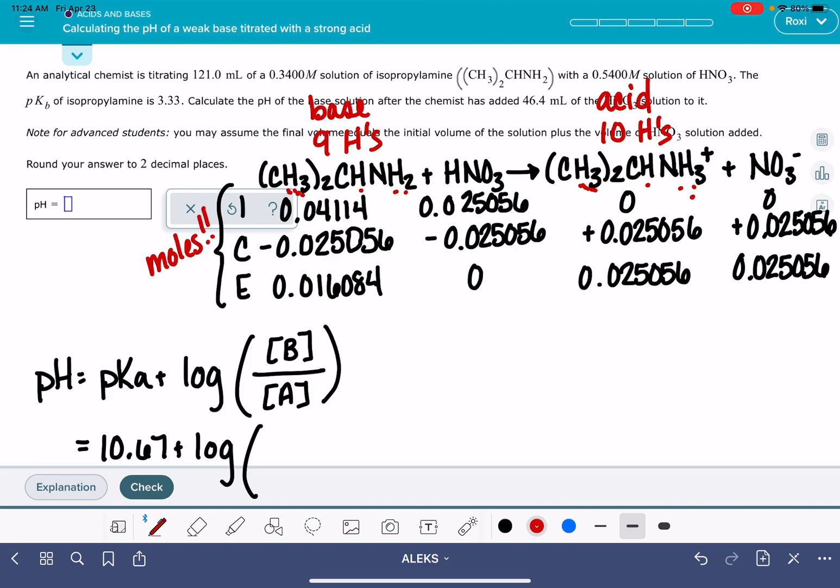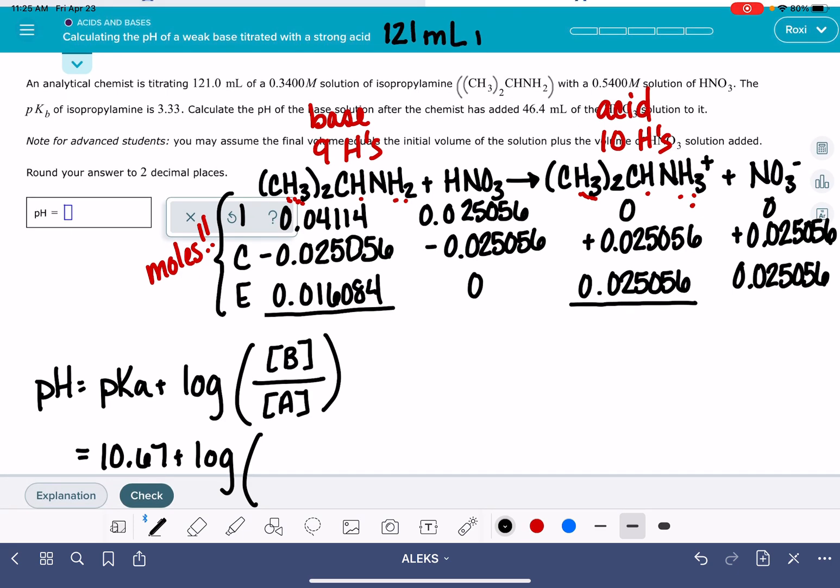Second thing we have to do is convert these numbers from moles back into molarity. You'll be doing this whether you have to use Henderson-Hasselbalch or not. To do this conversion, you just want to divide by the total volume in units of liters. We combined 121 milliliters plus 46.4 milliliters, which is 167.4 milliliters, which is 0.1674 liters. So we're going to put these numbers down here, 0.1674 liters for each.